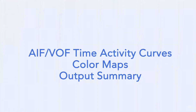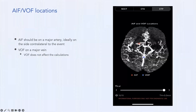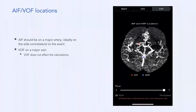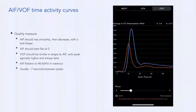When something doesn't make sense, look at your arterial input function (AIF) and venous outflow function time curves. The app places the AIF automatically using an algorithm on a major artery — ideally contralateral to the event. There are rare times it doesn't pick the right artery, and you can manually choose a different AIF, but in general you'll have a correct one.